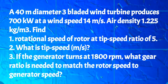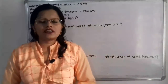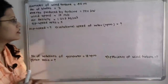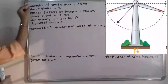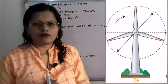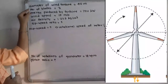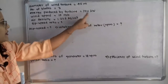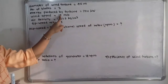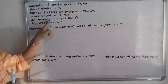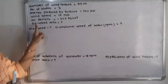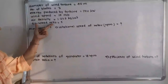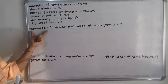Let us first understand what is the given data and which factors we have to find out. The diameter of the wind turbine is 40 meter, the number of blades is 3, energy produced by turbine is 700 kilowatt, wind speed is 14 meter per second, air density is 1.225 kilogram per meter cube, and tip speed ratio is 5.